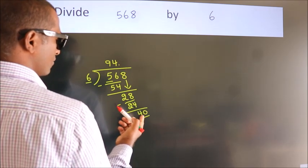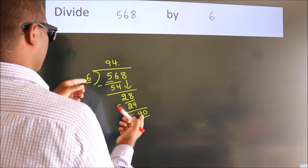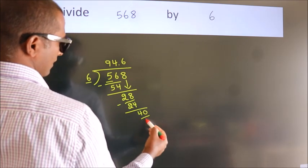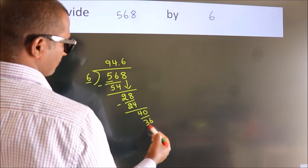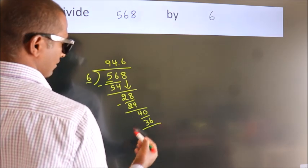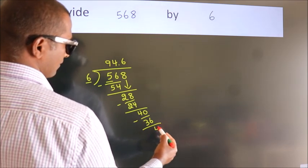A number close to 40 in the sixth table is 6 sixes, 36. Now we subtract. We get 4.